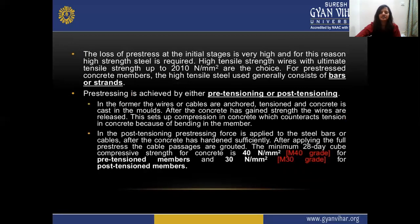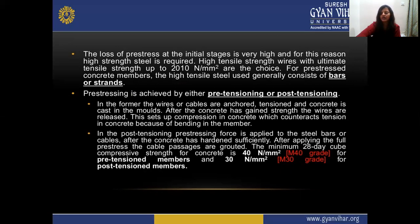The loss of pre-stress at the initial state is very high. For this reason, high strength steel is required. High tensile strength wires with ultimate tensile strength up to 2,010 N/mm² are the choice. For pre-stressed concrete members, the high tensile strength used generally consists of bars and strands.